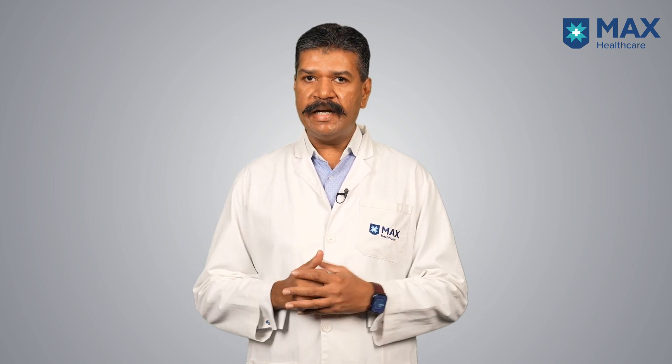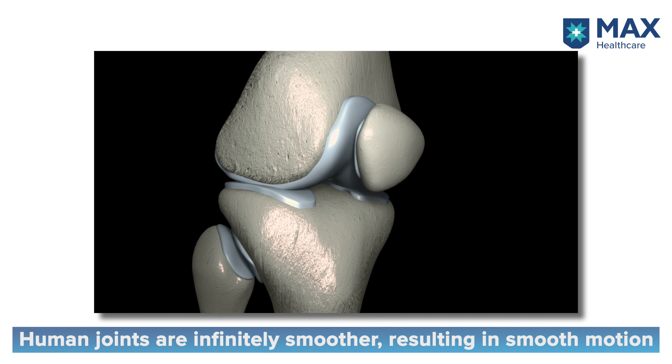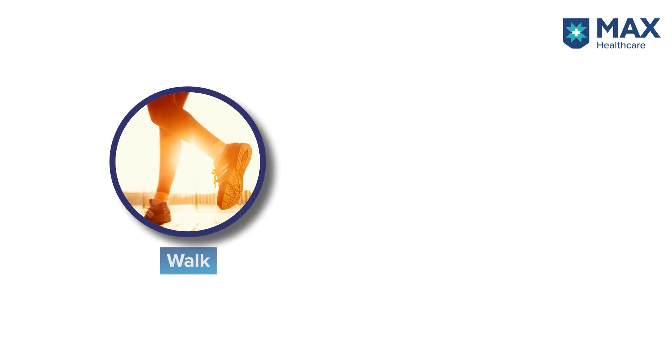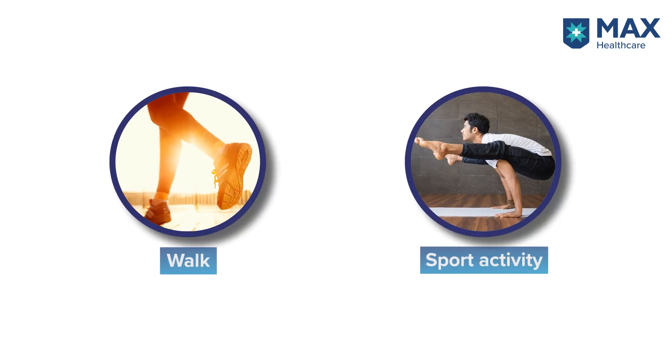Imagine two surfaces which don't have any friction between them — two slabs of ice sliding over each other, or two small smooth pieces of ceramic sliding over each other. Human joints are infinitely more smooth than that, and that is what gives you smooth motion. You're able to walk and do all kinds of sporting activities thanks to the lack of friction between the articulating surfaces in the human joint. When that friction is gone due to a disease, a trauma, or a ligament injury, that's what we call arthritis.